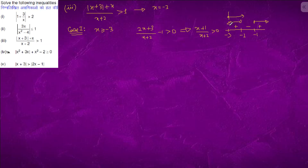The common part with our case x ≥ -3 gives the Case 1 solution. For Case 2, x < -3, it comes out to be (-3x+2)/(x+2) - 1 > 0.